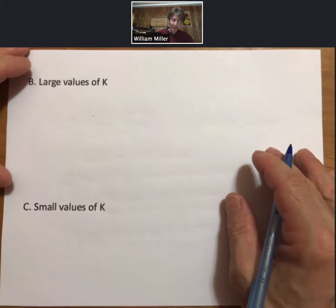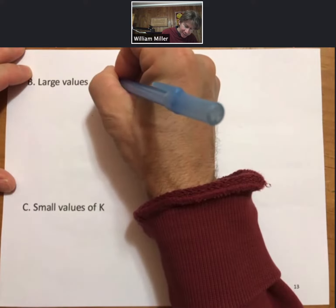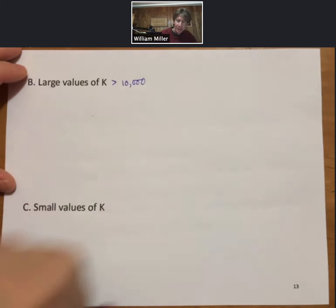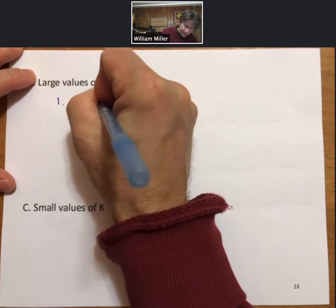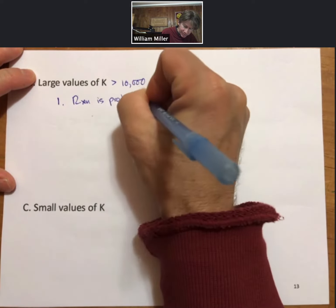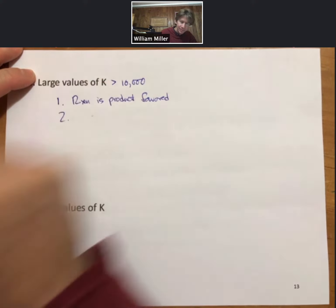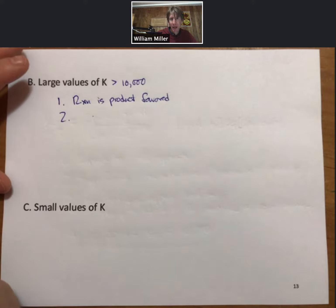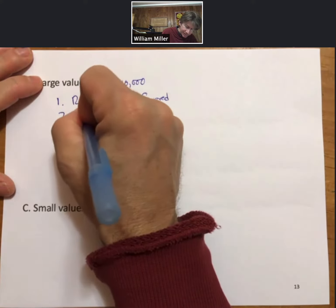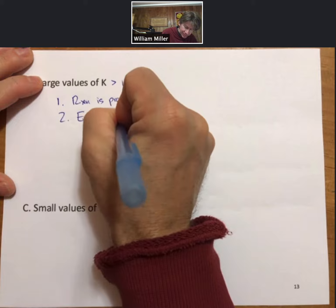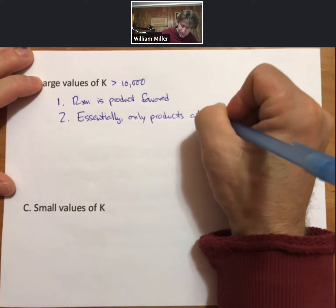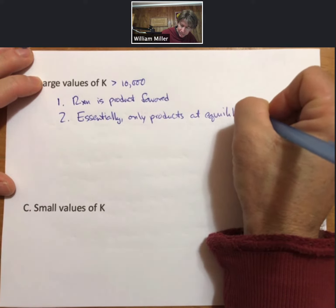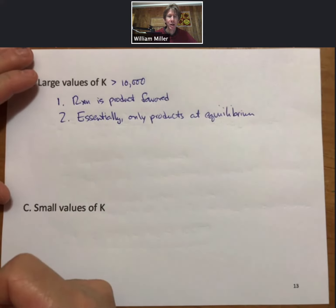Large values of K are generally going to be K greater than ten thousand. When this is true, we will say that the reaction is product favored, that there are essentially only products at equilibrium.